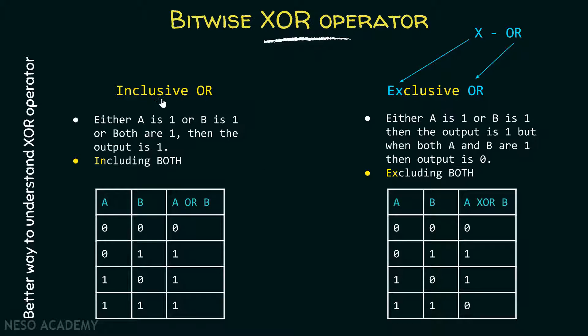Now this operator is called inclusive OR operator because it is including the both combination. That is, when both bits are one, then the output is one. This is the only difference we need to note down. Apart from that, XOR gets its name from exclusive OR, taking X from here and OR from here.